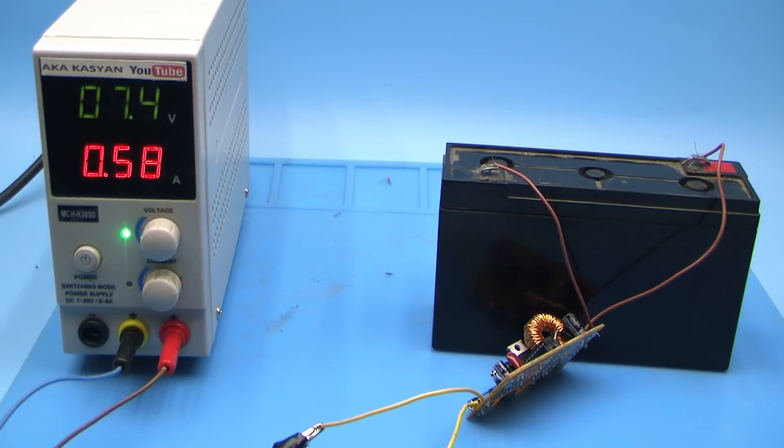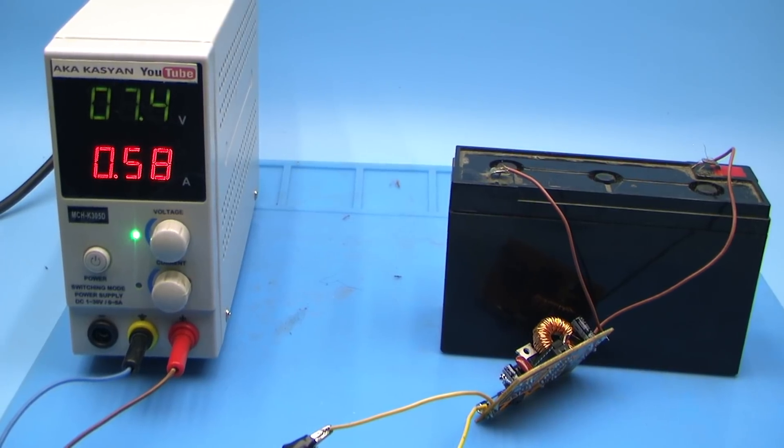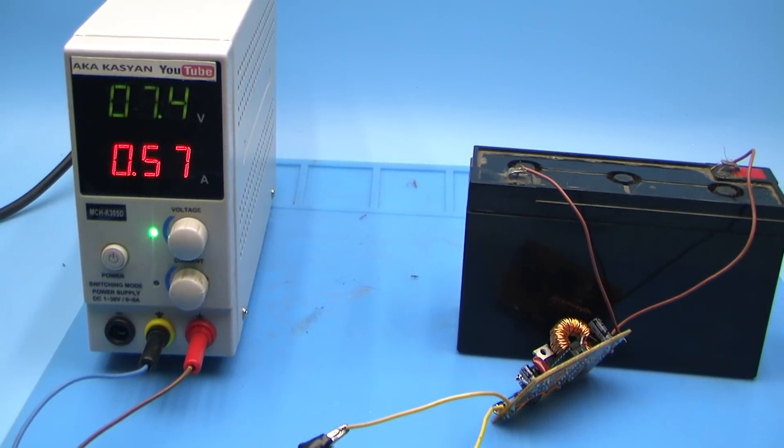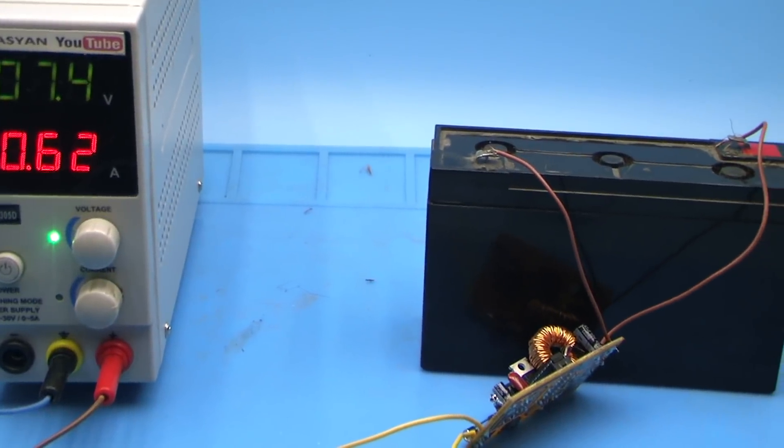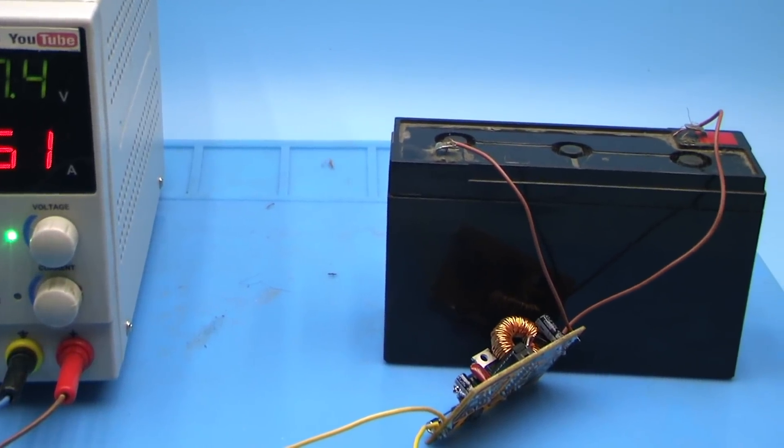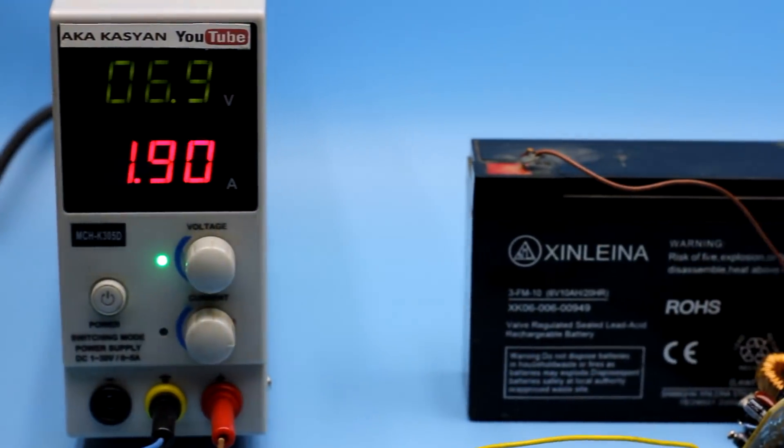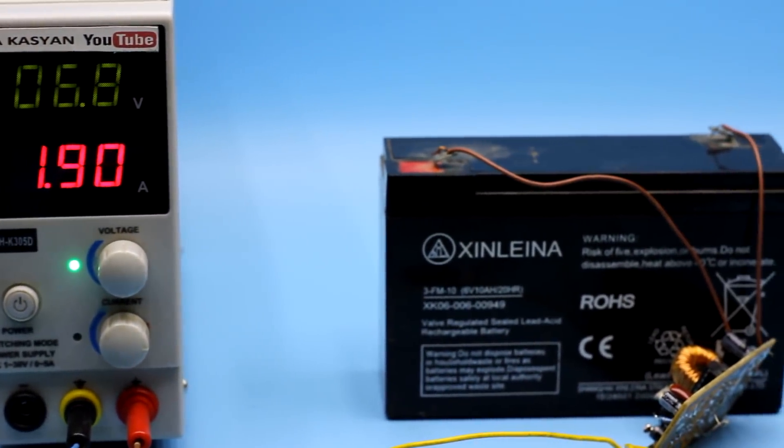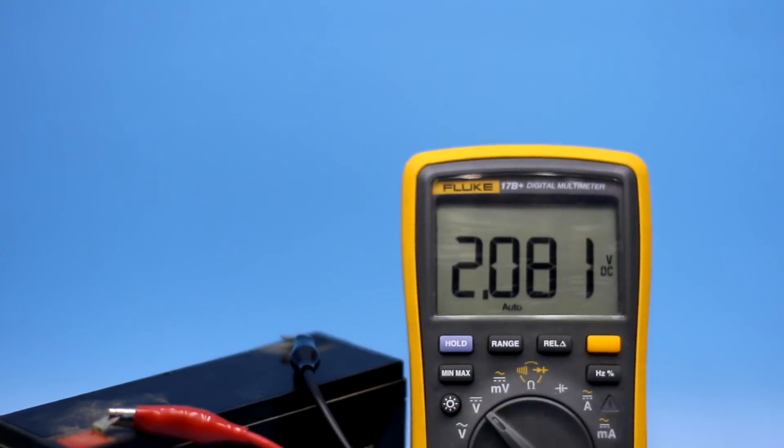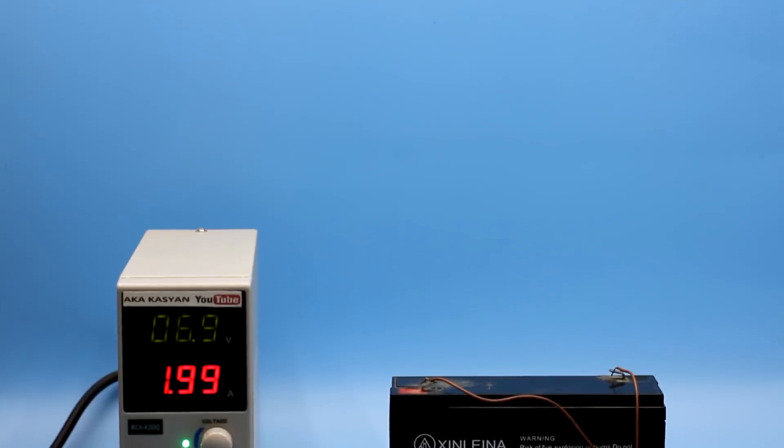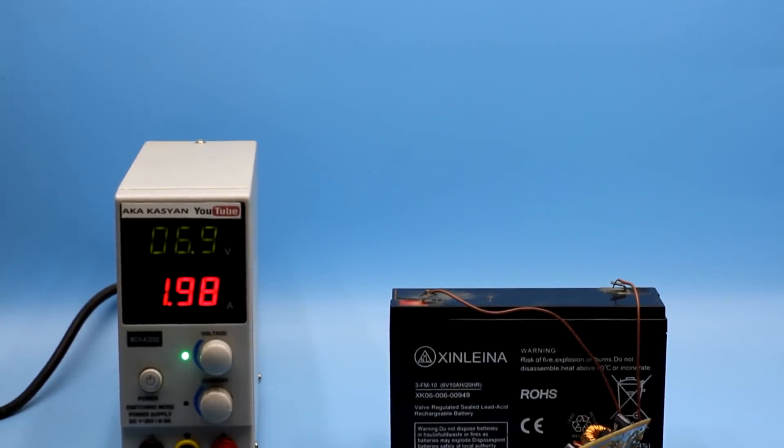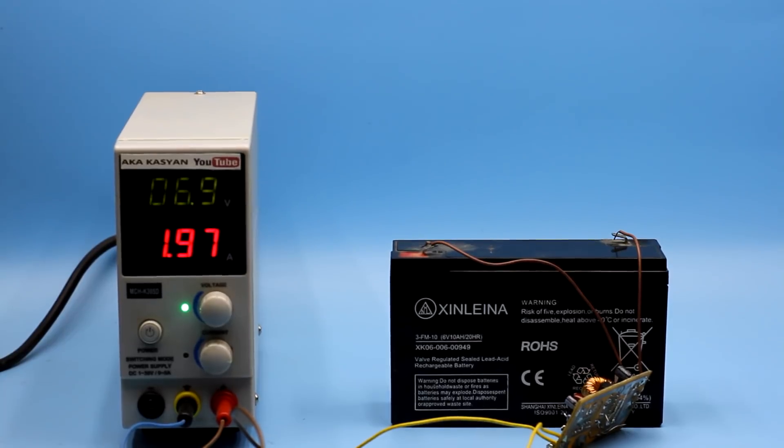How long should the disulfation process last? The author of the device says that within 2 weeks of regular charging, it is possible to completely restore the old battery. Of course, without verification, I wouldn't record this video. I have several 6V batteries for 10 Ah, which was unused for several years. Within 5 days, I regularly charged one of these batteries with disulfator and then discharged.